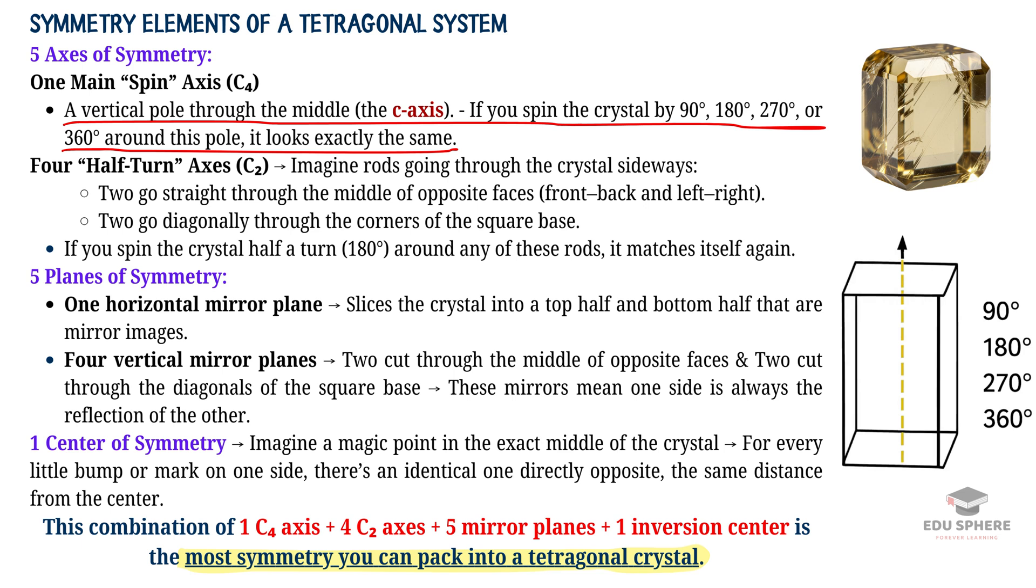If it had more than one, it would be a cubic crystal. If it had none, it would be a different type of crystal. This single feature is the ultimate test.